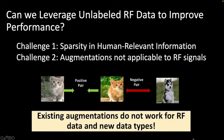Moreover, traditional unsupervised methods rely on strong augmentations, for example color jittering. However, these RGB-specific augmentations cannot be directly applied to RF signals. RF data has no color information, and it is not invariant to rotation transformation, making most of the existing unsupervised learning methods not directly applicable.